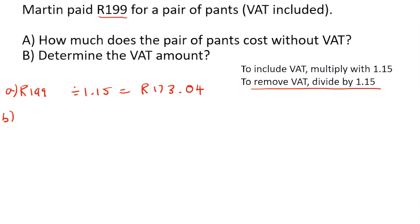Now question B says, determine the VAT amount. So the original price was 199, and the price without the VAT is that. So you can just minus those two. So you can say 199 minus 173.04, and that'll be 25.96.